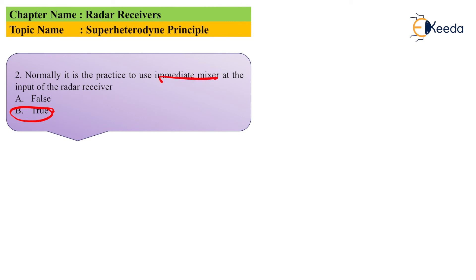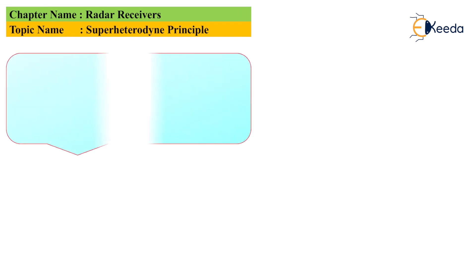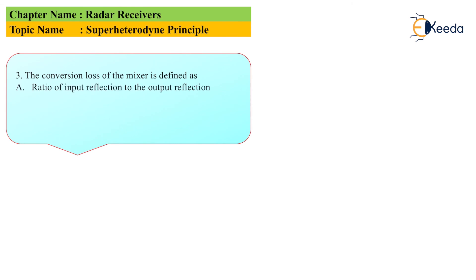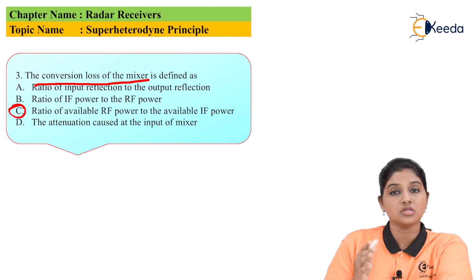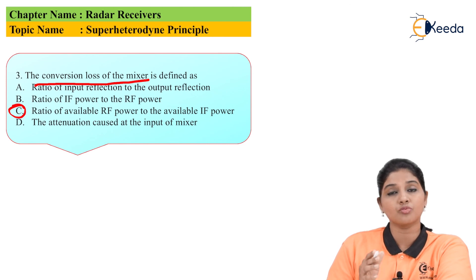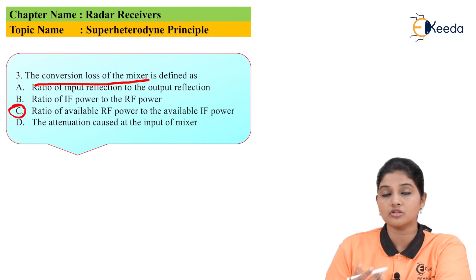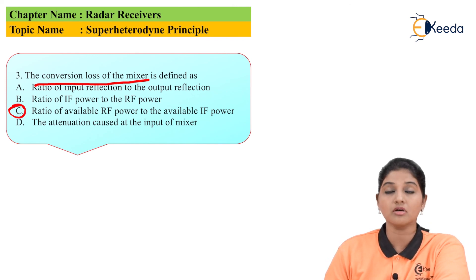The third question: the conversion loss in the mixer is defined as — Option A: ratio of input reflection to output reflection; Option B: ratio of RF power to RF power; Option C: ratio of available RF power to available IF power; Option D: attenuation caused at the input of the mixer. The correct answer is Option C — the ratio of available RF power to available IF power is the conversion loss in the mixer. Typically, the mixer provides 5 to 6.5 dB of conversion loss, which is an important parameter to consider when designing the receiver.